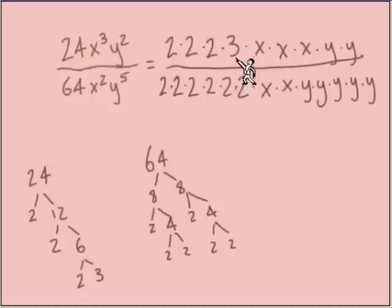For the variables, x to the third, I've written x times x times x, and there's the y squared, y times y. In the denominator, there's our x squared and y to the fifth. This example, I'm doing a lot of writing, but I can see exactly everything that I can cancel. Now I get to have fun canceling as much as possible.